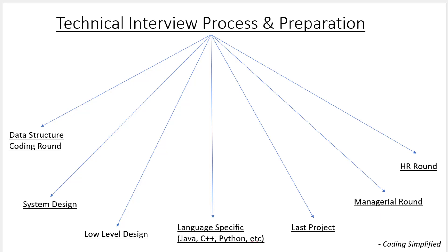So the technical interview process covers: coding and data structures, system design, low-level design, language-specific concepts, last project discussion, the manager round, and the HR round. I will put all the related video links in the description. If you have any points to discuss, please write in the comment section. If you liked the video, please like it and subscribe to the channel for more such videos. Thank you.